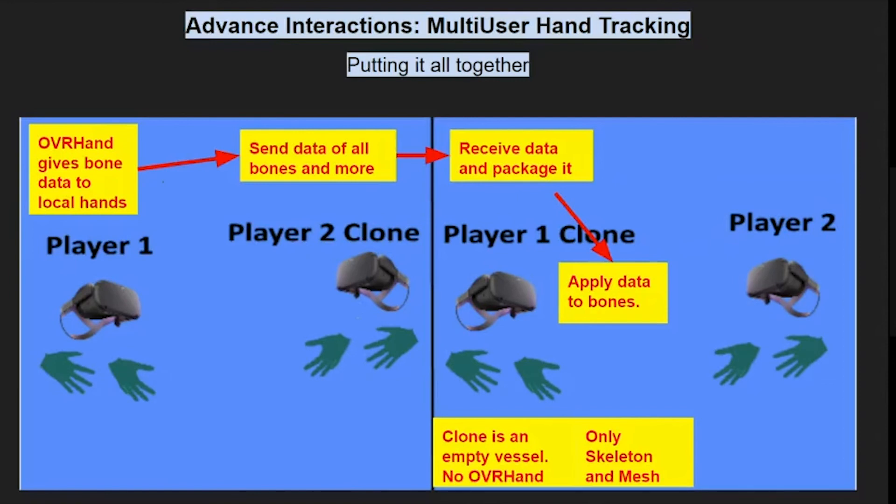The OVRHand for the local player is still going to feed the data to its own skeleton, so nothing is going to change in that regard. Then we're going to send the data of our bones across the network. We're going to receive it, we're going to package it, and then we're going to apply it to the bones of the skeleton of our clone.